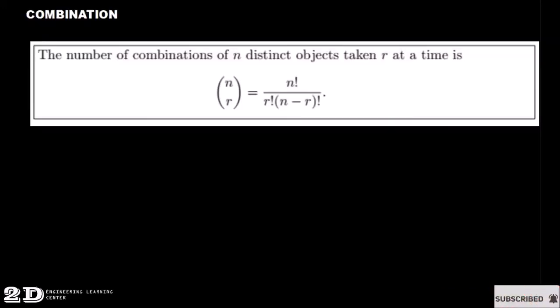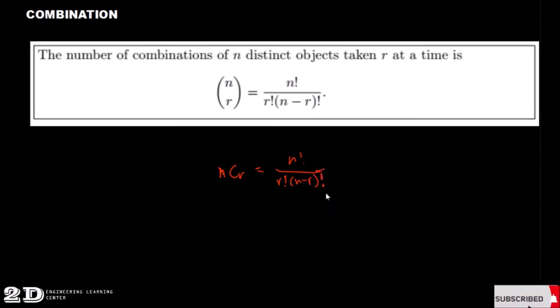Lastly, we have combination. The number of combinations of n distinct objects taken r at a time is nCr = n! / (r! · (n-r)!). Combination is also defined as an arrangement or selection of objects regardless of order — meaning we are not particular with the order.